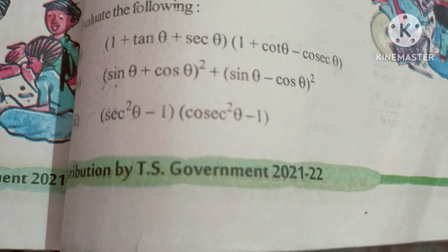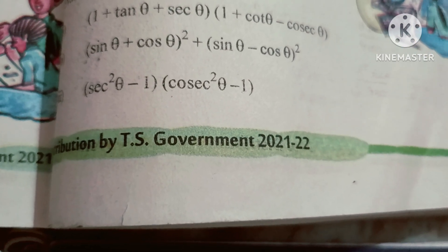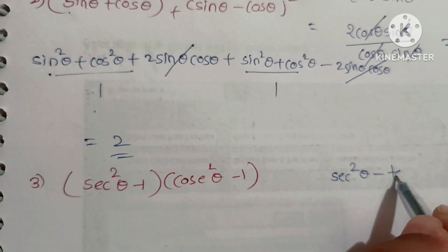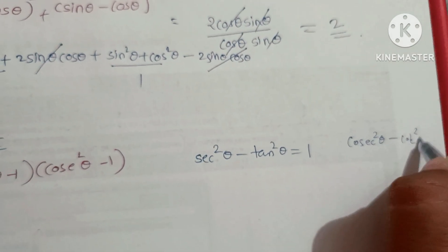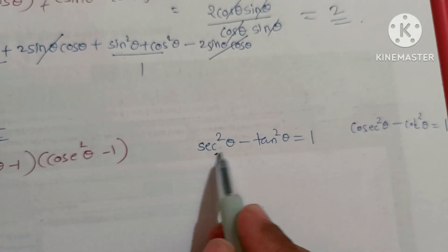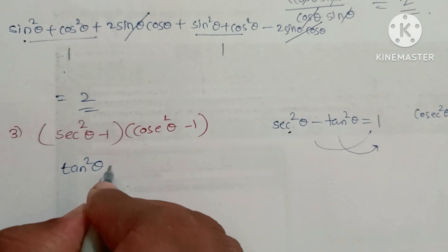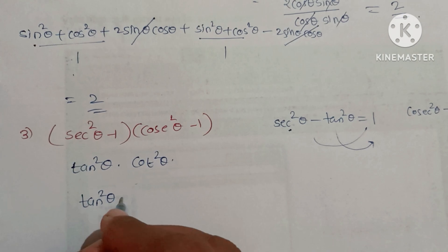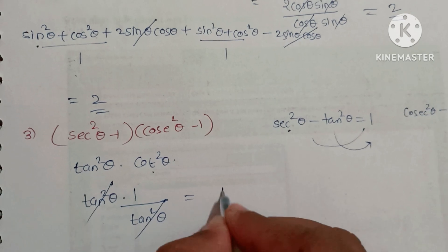Third question: (sec²θ - 1) × (cosec²θ - 1). Using identities: sec²θ - tan²θ = 1, so sec²θ - 1 = tan²θ. Also cosec²θ - cot²θ = 1, so cosec²θ - 1 = cot²θ. Therefore the expression becomes tan²θ × cot²θ = tan²θ × (1/tan²θ). Tan²θ cancels, so the answer is 1.